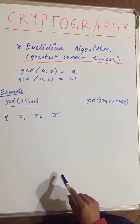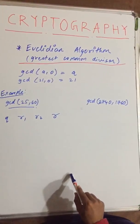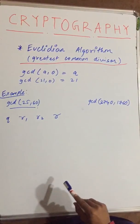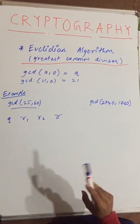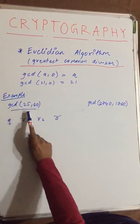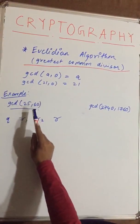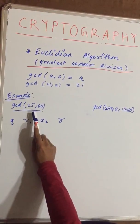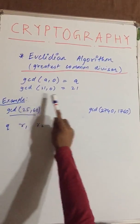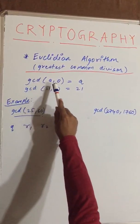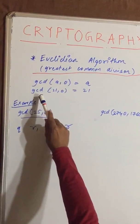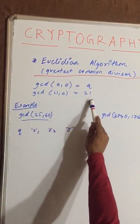Hello friends. In this lecture you will learn about the Euclidean Algorithm. The Euclidean Algorithm is basically used to find the greatest common divisor between two numbers. For example, GCD of 25 and 60 — you have to find the greatest common divisor between these two numbers. One important fact is that GCD of A comma 0 is always A. For example, GCD of 21 comma 0 is 21.